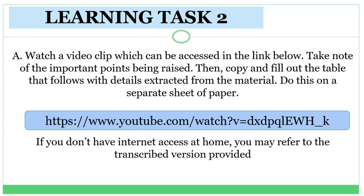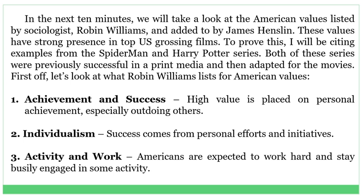Learning Task two, Letter A: Watch a video clip which can be accessed in the link below. Take note of the important points being raised. Then copy and fill out the table that follows with details extracted from the material. Do this on a separate sheet of paper. If you don't have internet access at home, you may refer to the transcribed version. In the next 10 minutes, we will take a look at the American values listed by sociologist Robin Williams and added to by James Henslin. These values have a strong presence in top US-grossing films. I will be citing examples from the Spider-Man and Harry Potter series.